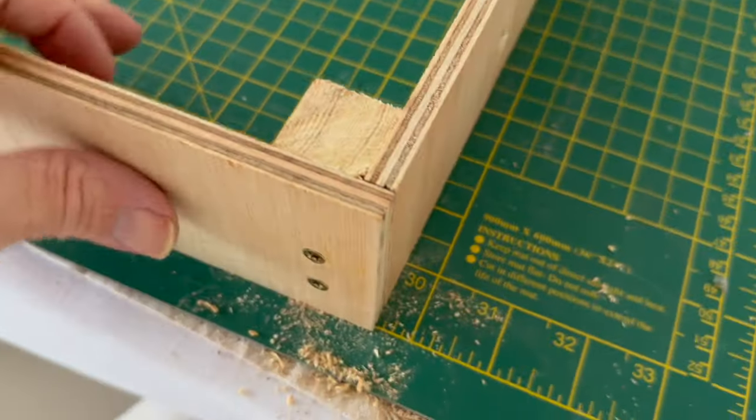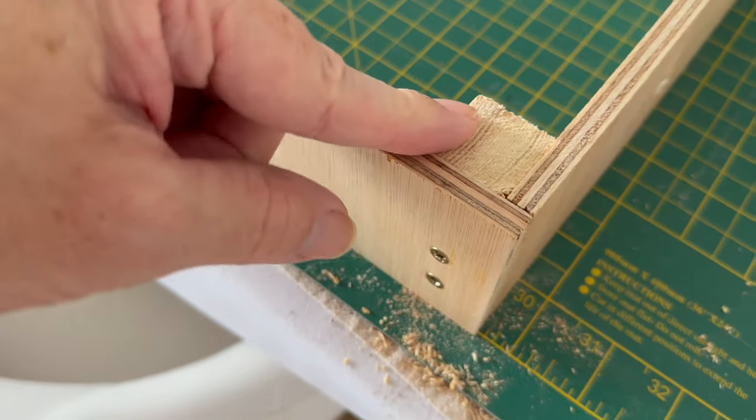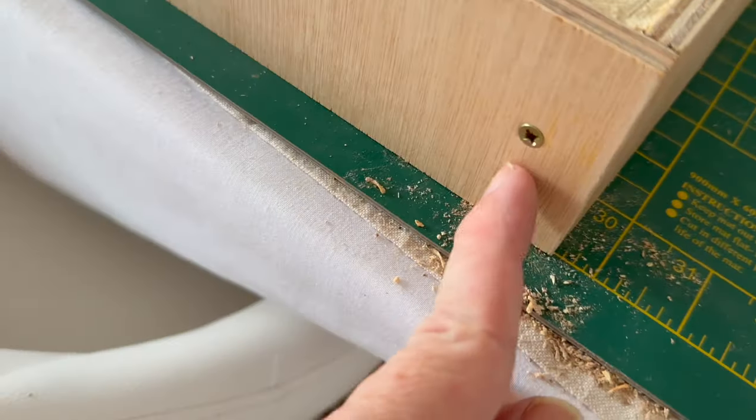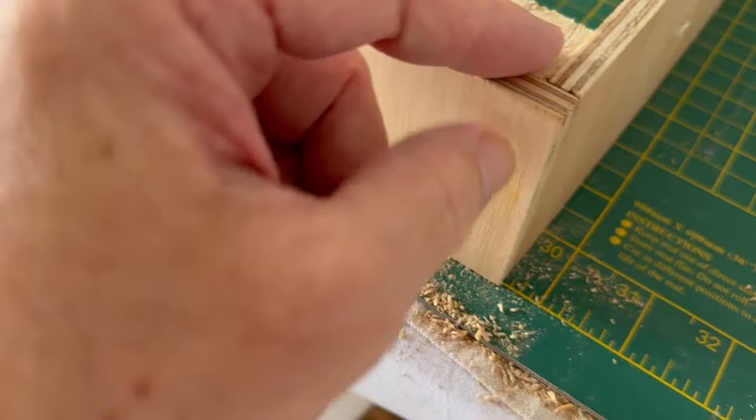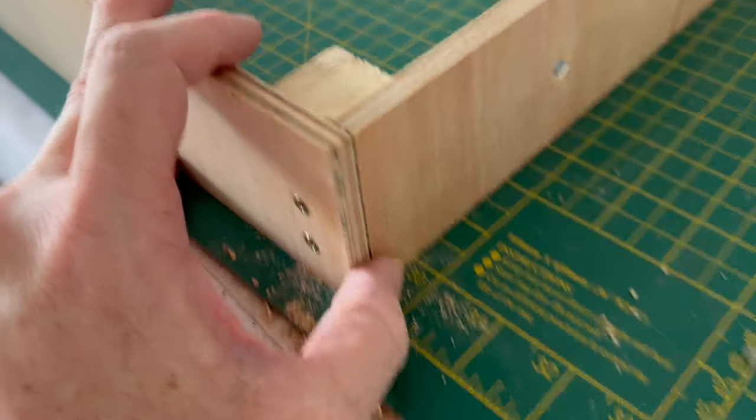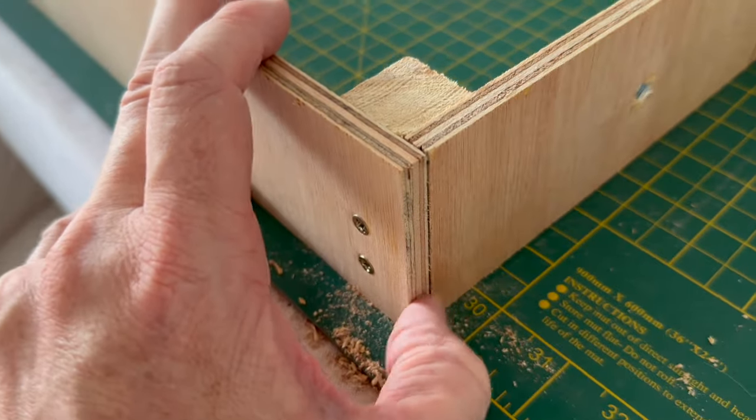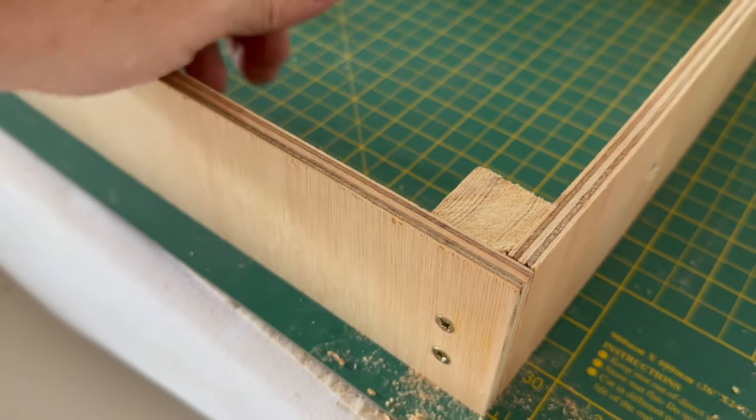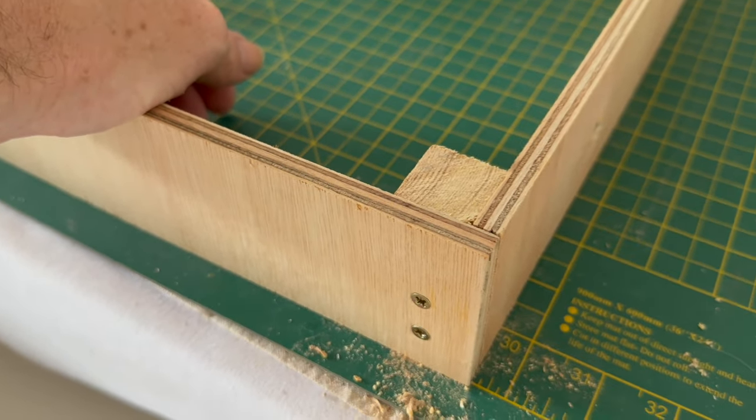As you can see, I've got the block here that's basically so that these screws I'm putting in the sides have got something to bite into, and I've got as flush as I can on the sides there so when I attach all the baseboards together it should be as straight as possible.